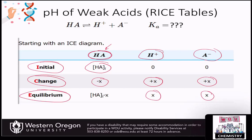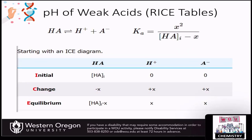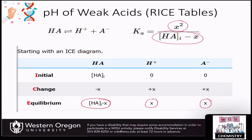The Ka value is the concentration of products over reactants at equilibrium. Each of the values for the protons and the conjugate base is x, so multiplying those together gives x² in the numerator. In the denominator, the acid at equilibrium is HA_initial minus x — however much dissociated. That's how we calculate our Ka value.